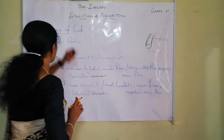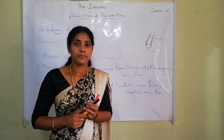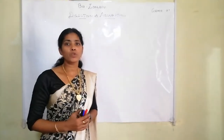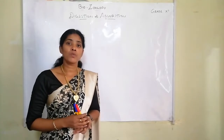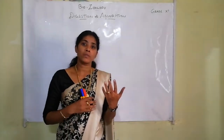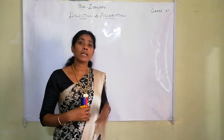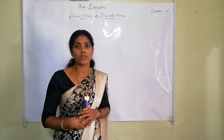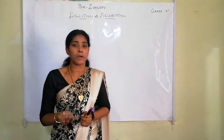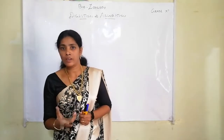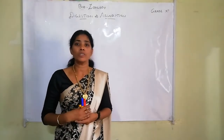Now let us move to the next topic: glands associated with the digestive system. Digestive glands involved in the digestive process include the salivary glands, liver, pancreas, gastric glands present in the stomach, and intestinal mucosa secretions.